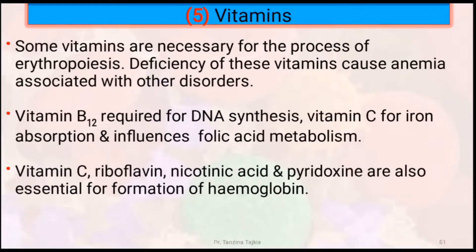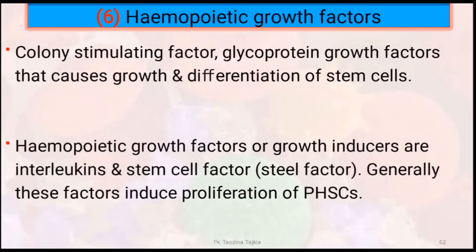Then vitamins: some vitamins are necessary for erythropoiesis, and their deficiency causes anemia associated with other disorders. Vitamin B12 is required for DNA synthesis. Vitamin C is needed for iron absorption and influences folic acid metabolism. Vitamin C, riboflavin, nicotinic acid, and pyridoxin are also essential for the formation of hemoglobin. Hemopoietic growth factors — colony stimulating factor and glycoprotein growth factor — cause growth and differentiation of stem cells. These include interleukins and stem cell factor, which induce proliferation of pluripotent hemopoietic stem cells.